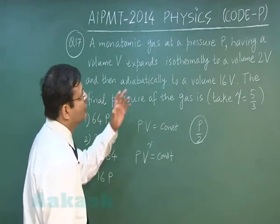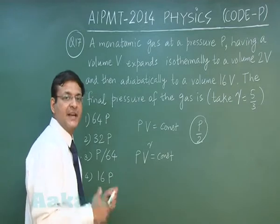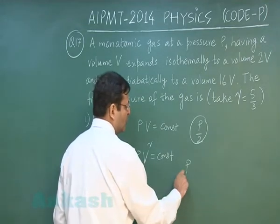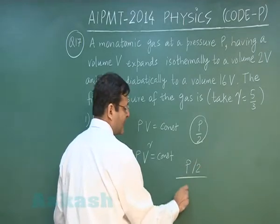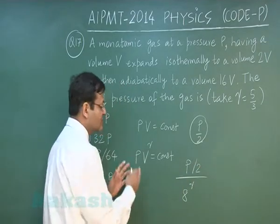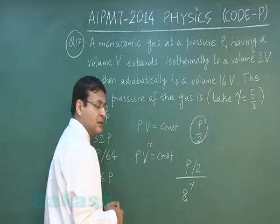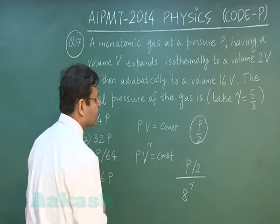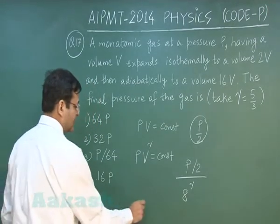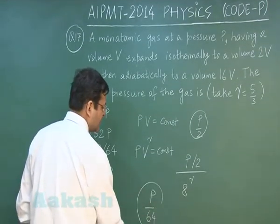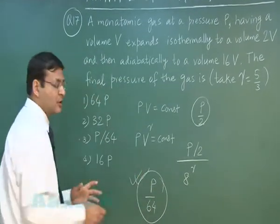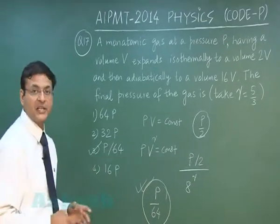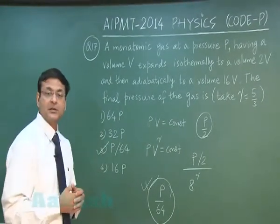The volume increases from 2v to 16v, which is 8 times. So the new pressure will be (p/2) divided by 8^γ. Solving this for γ = 5/3, the final pressure comes out to be p/64. This is option number 3, and that explains question number 17.